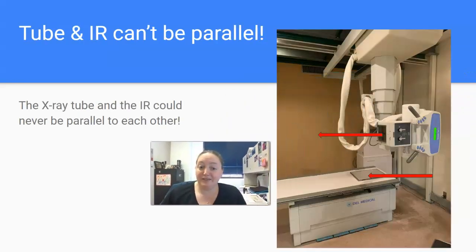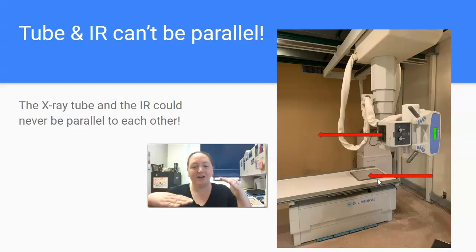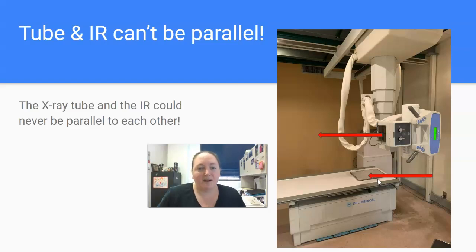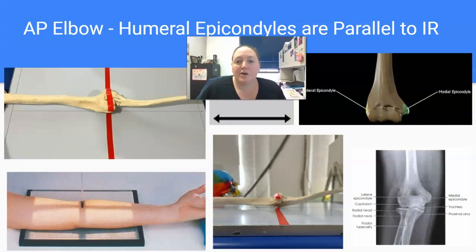Your central ray and your image receptor cannot be going in the same direction because they're not going to meet each other. So your tube and your IR can never be parallel. When it comes to anatomy, they're either perpendicular or parallel.